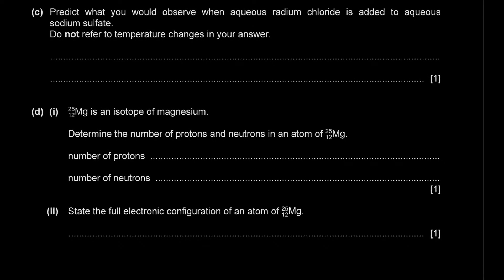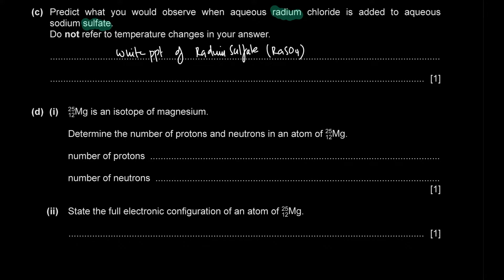Part D asks what we would observe when aqueous radium chloride is added to aqueous sodium sulfate. The solubility of Group 2 sulfates decreases down the group. Magnesium sulfate is soluble, calcium sulfate is partially soluble, strontium and barium sulfate are insoluble, so radium sulfate would be even less soluble. We predict a white precipitate of radium sulfate, RaSO4.